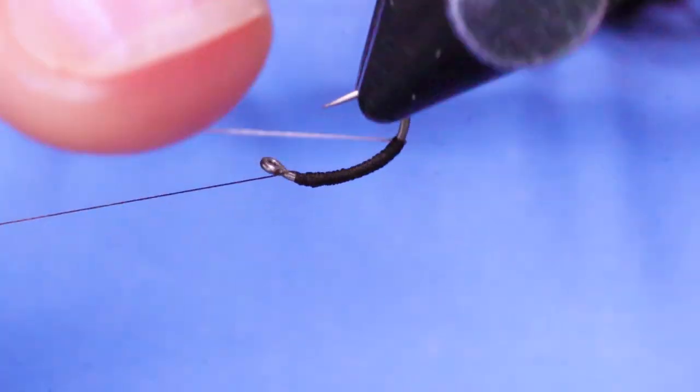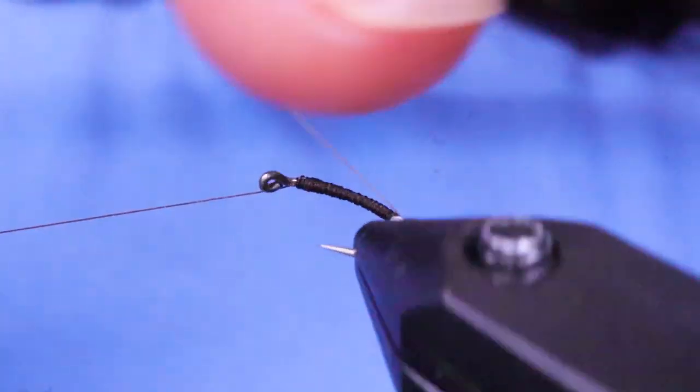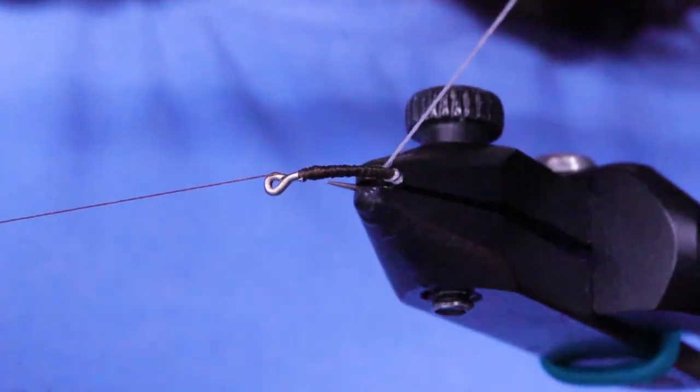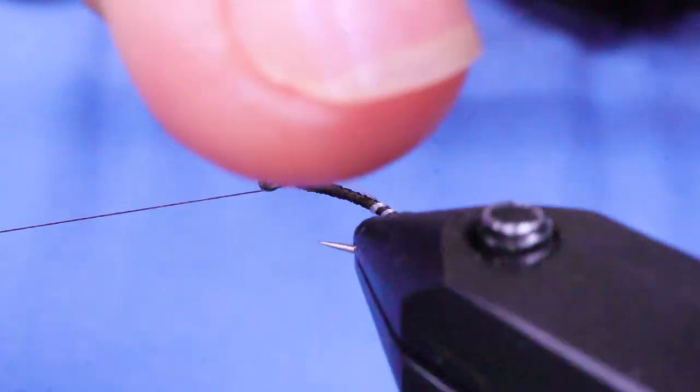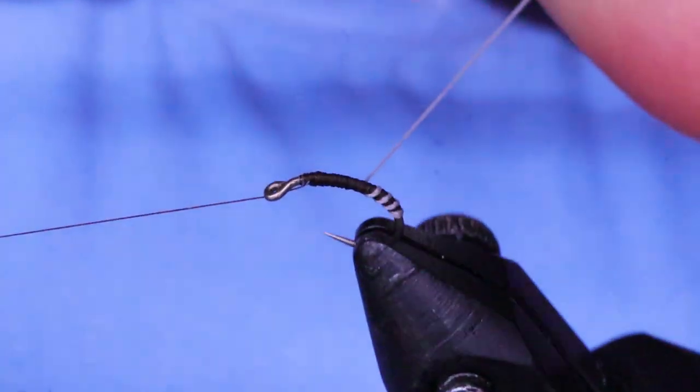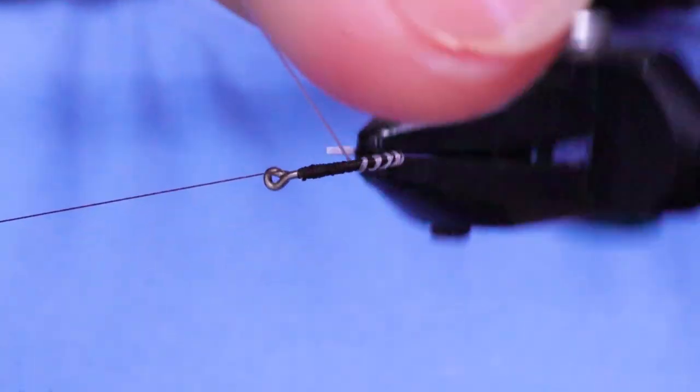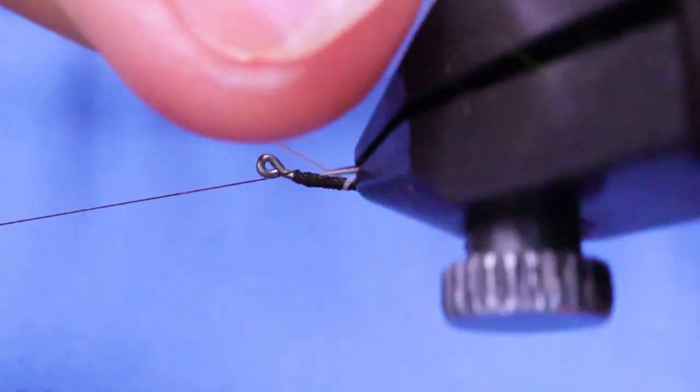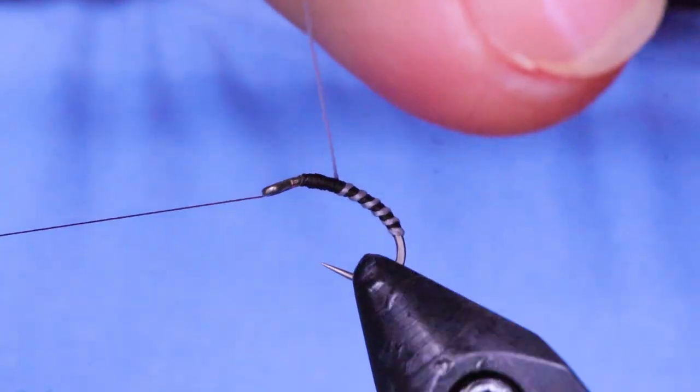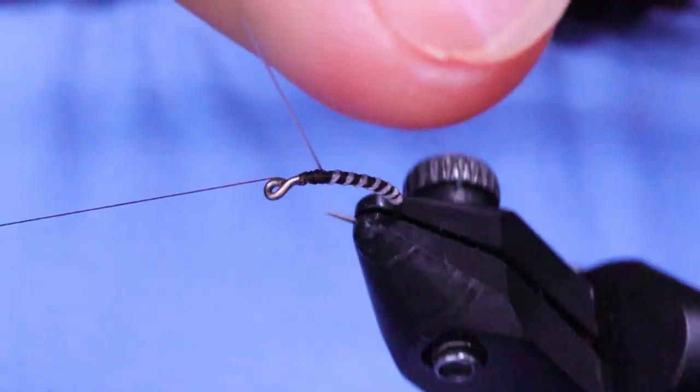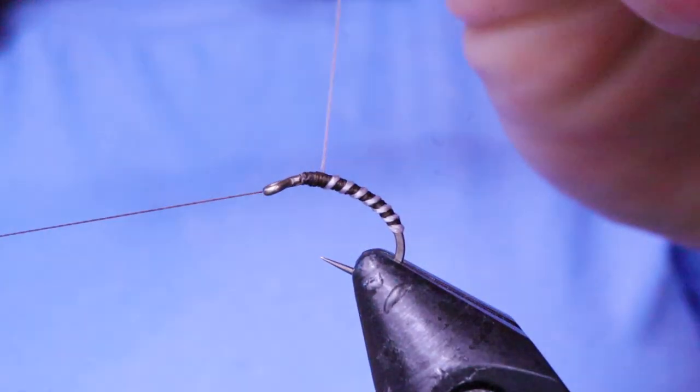Next just take your rib material. It seems to be quite a few ways to tie this. I've seen just three or four ribs on it, and I've seen it done this way. I prefer it this way. It's more like a chironomid or a quill body. In fact, it's a really good imitation of a quill body.